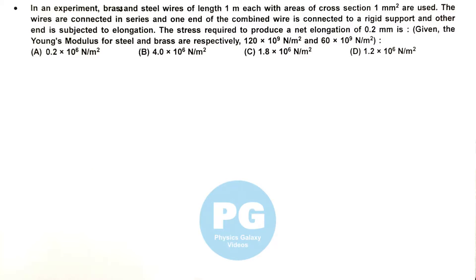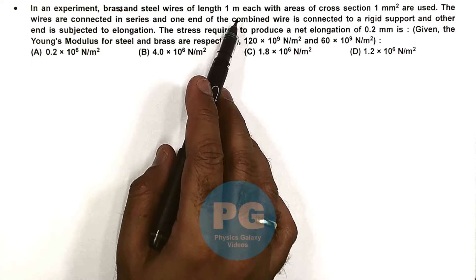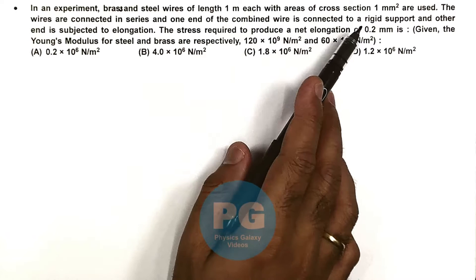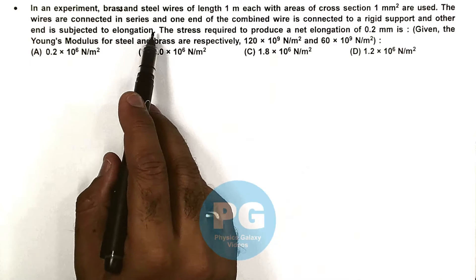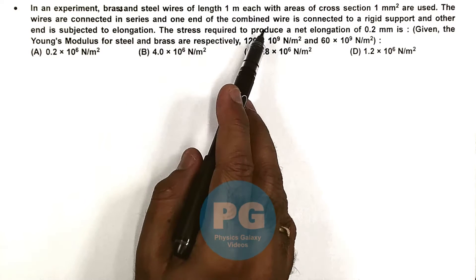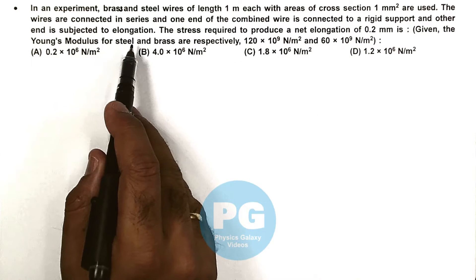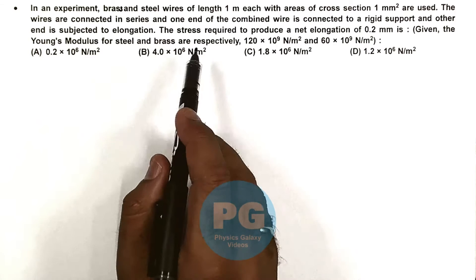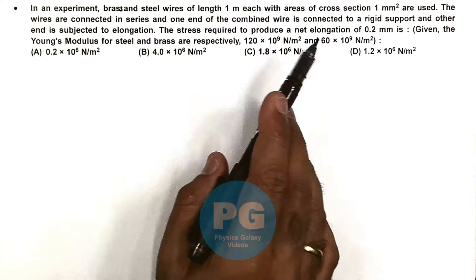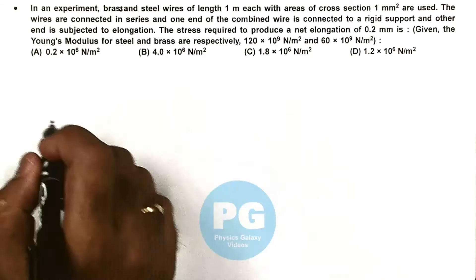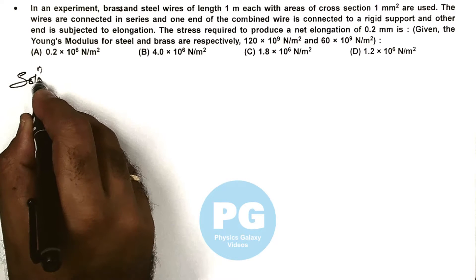In this question, in an experiment brass and steel wires of length 1 meter each with areas of cross section 1 mm² are used. The wires are connected in series and one end of the combined wire is connected to a rigid support and the other end is subject to elongation. We are required to calculate the stress required to produce a net elongation of 0.2 mm, and Young's modulus of both are given.